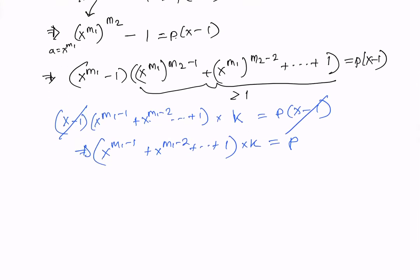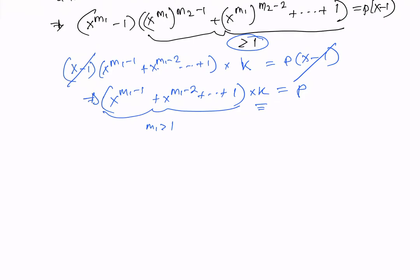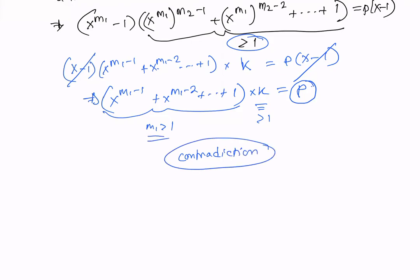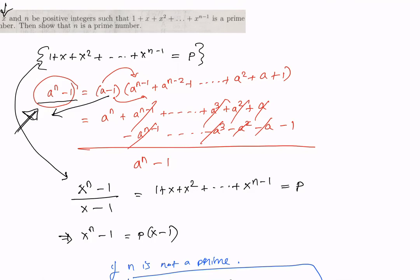But how is this possible? k is greater than 1, and the other factor is also greater than 1 because m₁ > 1 — that's what we assumed when we said n was not prime and factored it into m₁ and m₂, neither equal to 1. So we have factorized p into two numbers both greater than 1, which contradicts p being prime.